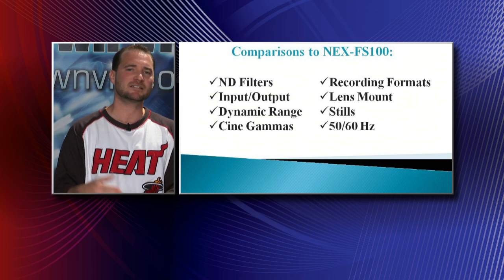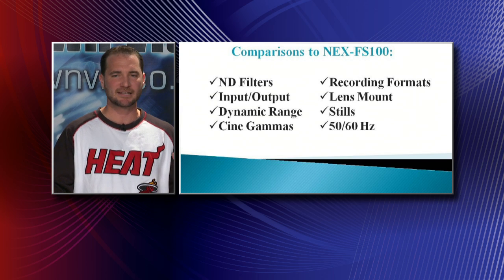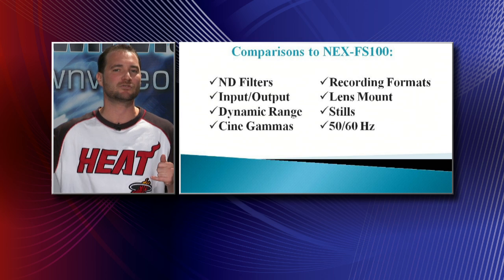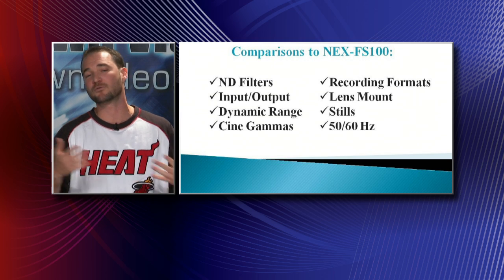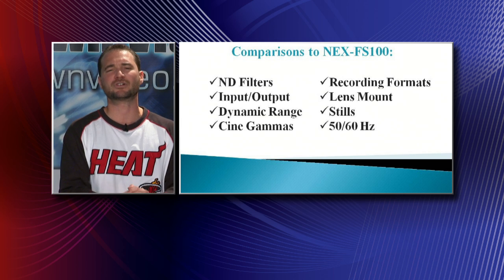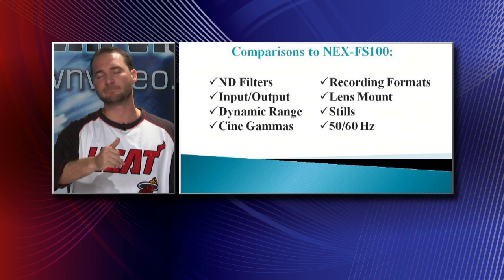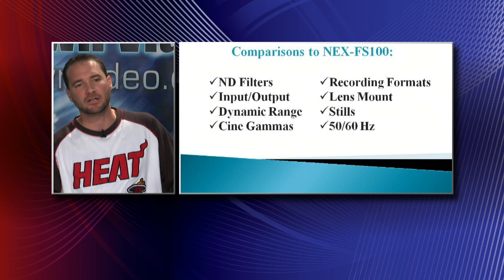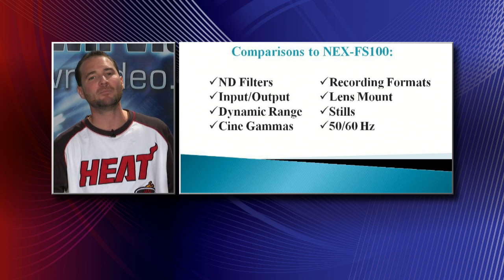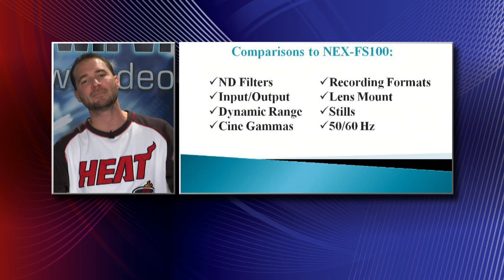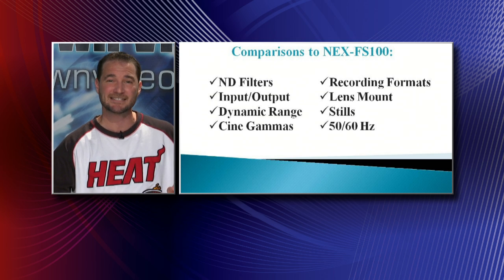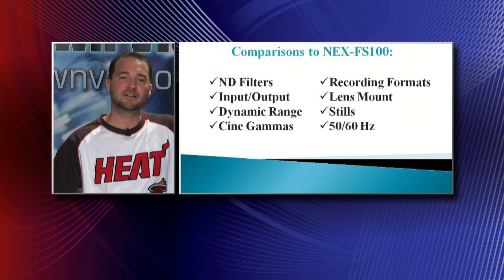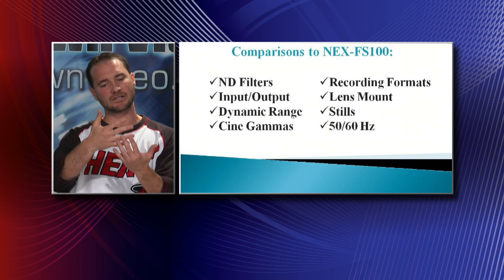The lens mount is identical to the NEX FS100 — Sony's E-mount. You can buy the camera with an 18-200mm lens, roughly f/3.5 to f/5.6. You can also get it body-only and put Canon, Nikon, or PL mount adapters on it. Canon EF adapters that are battery-powered are still awaited — at the moment it's all mechanical, meaning you lose your iris control. That's why the built-in ND filters are so important if you're using Canon lenses. In the meantime, get yourself a variable ND filter to screw onto the front of your lens.